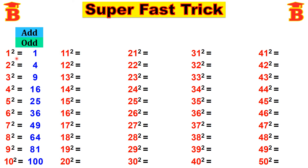Therefore: 1 squared equals 1, 2 squared equals 4, 3 squared equals 9, 4 squared equals 16, 5 squared equals 25, 6 squared equals 36, 7 squared equals 49, 8 squared equals 64, 9 squared equals 81, and 10 squared equals 100.